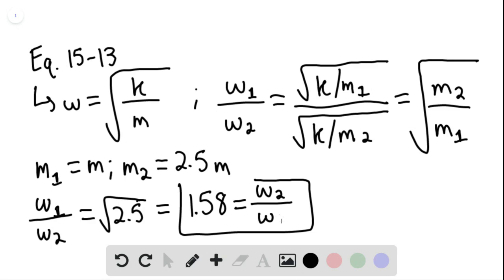Omega sub 2 divided by omega sub 1. Again, our answer, our ratio would be 1.58. That is the end of the solution. Thank you for watching.